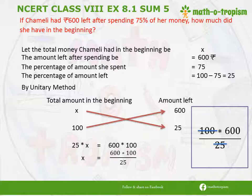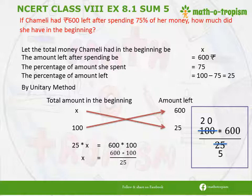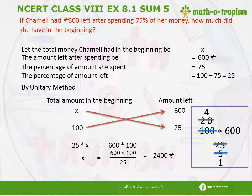When we divide 100 by 5, we get 20, and 25 by 5 gives us 5. We can see that 20 and 5 are again divisible by 5, giving us 4 and 1. So 4 into 600 gives us the answer Rs. 2400.